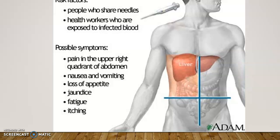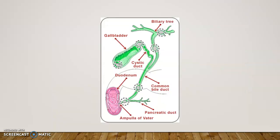Another pathology that can happen in the right upper quadrant is gallstones. Gallstones can develop in the gallbladder, which is right underneath the liver — you can't see it in this picture, but there's the gallbladder. Gallstones can be produced inside the gallbladder.